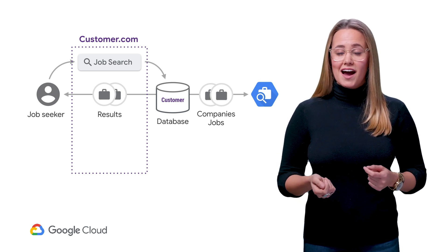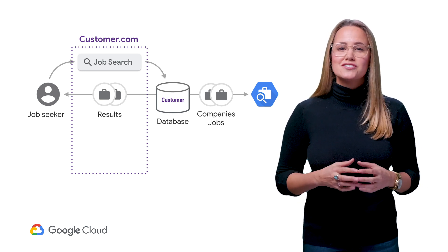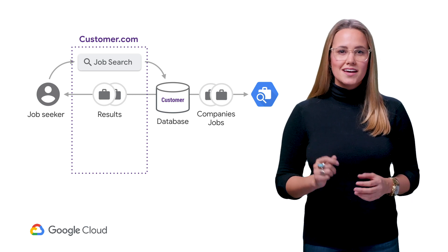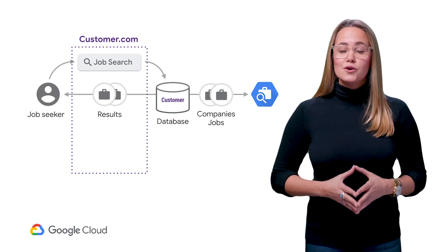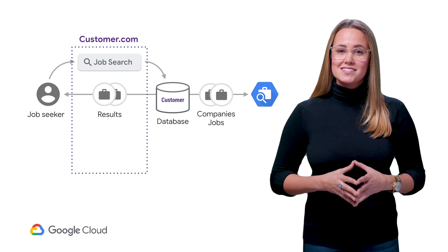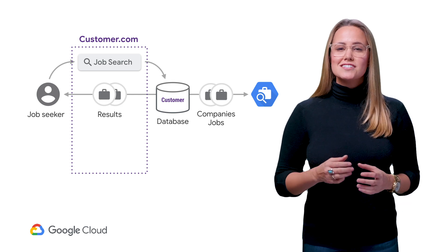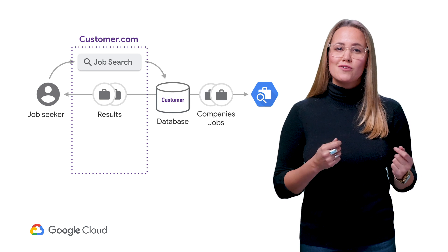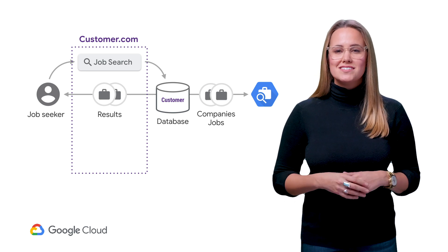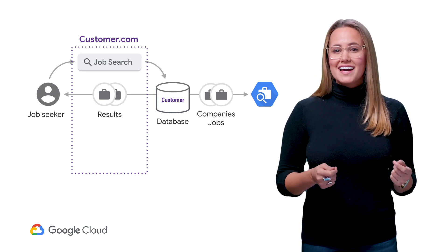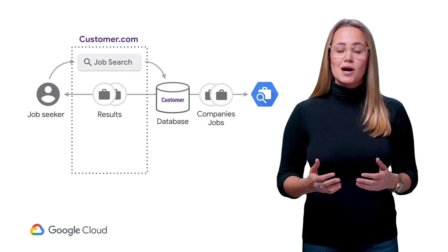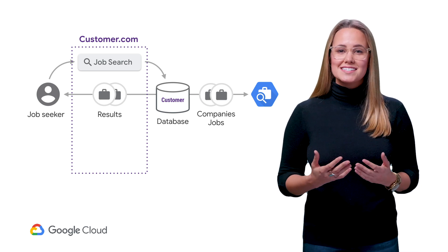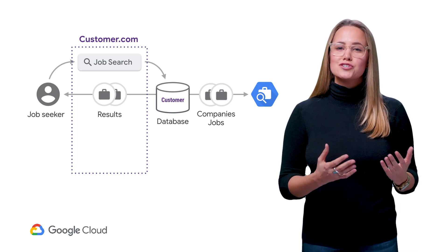To get the data into the API, you'll connect it to your database, but not to your front end quite yet. Using the Google Client Library, which is available in a number of languages, you can access the Job Search API directly, or you can implement a custom connector through the REST or RPC interface. Once connected, you can start by sending a list of jobs and companies to the API, which then analyzes and indexes them into a searchable form.